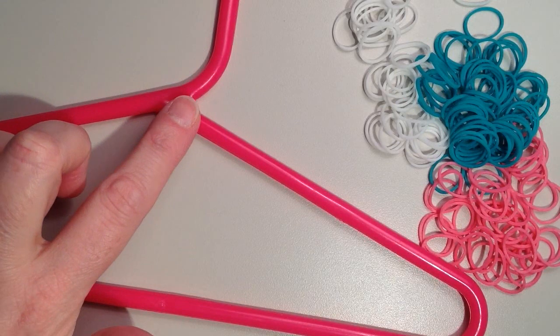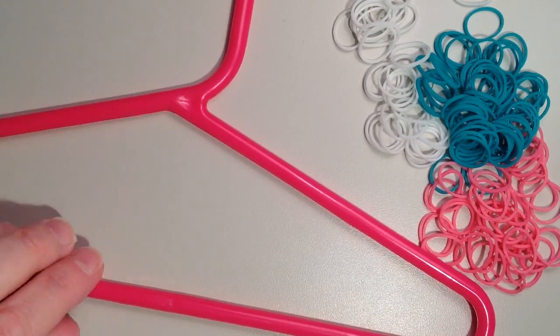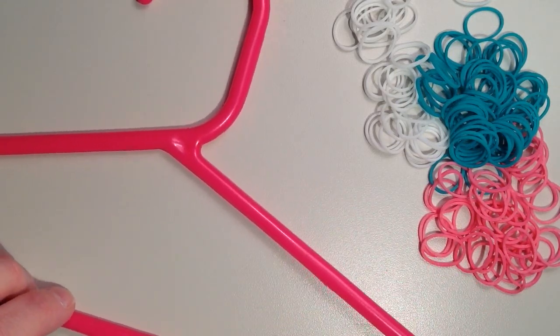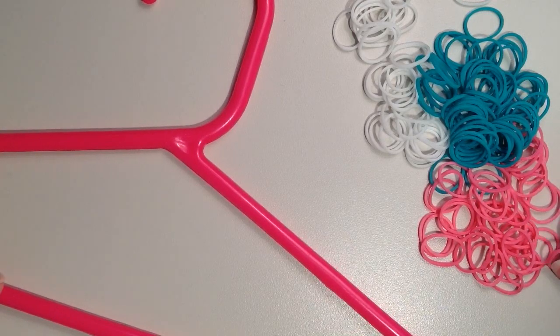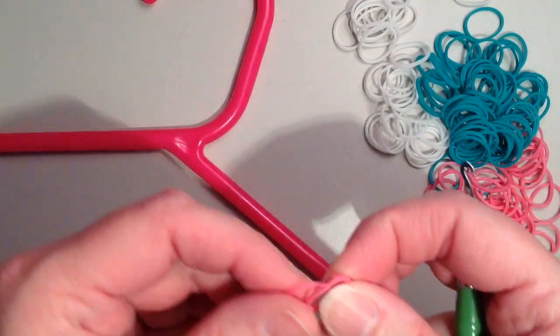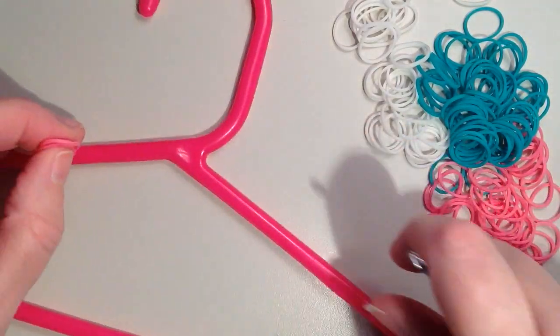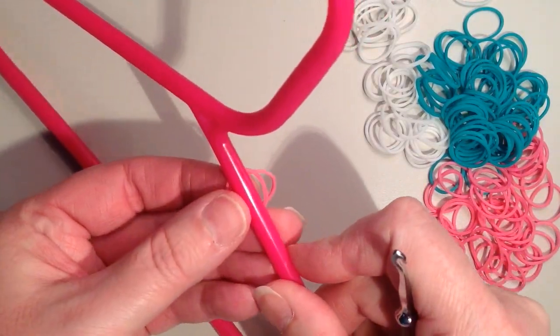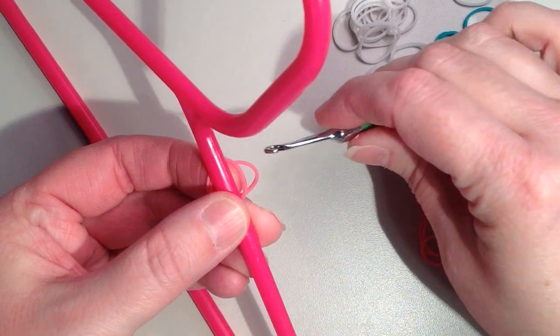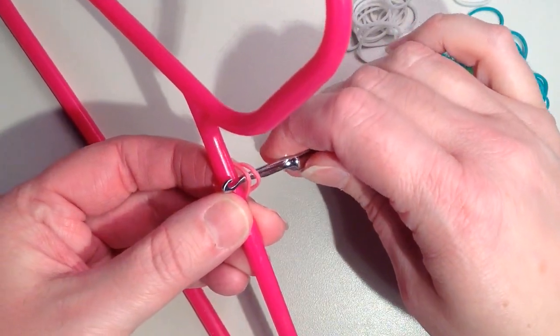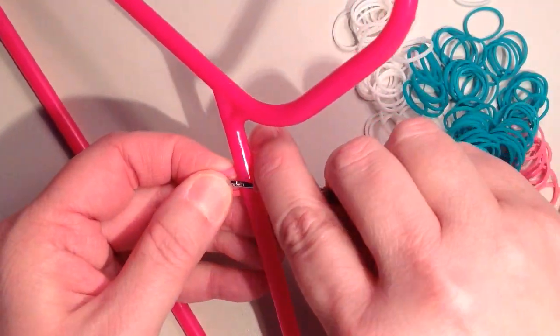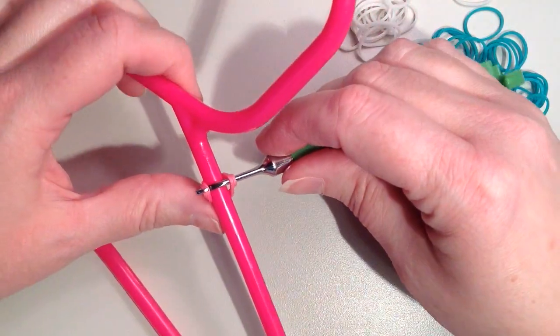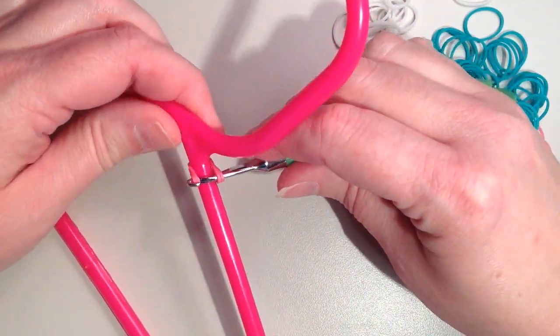So I'm going to be starting at the top here on the right hand side, and I am going to be using two bands at once every time. So let me start with the pink here. You take your two bands and you're just going to put them underneath of the hanger. Then you want to take your hook and you want to grab the two bands from the right side and then also from the left.